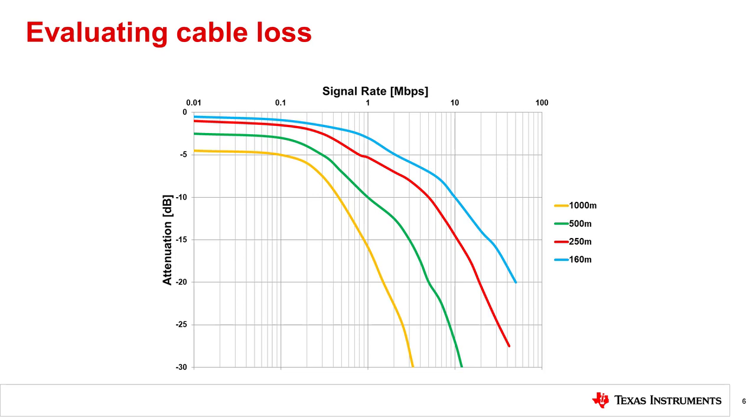Additionally, system designers should choose receivers with positive and negative input thresholds which are symmetrical and close to zero in order to minimize duty cycle distortion.